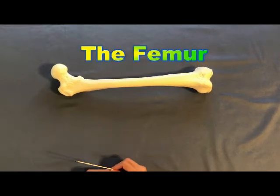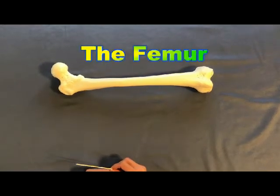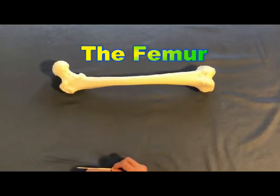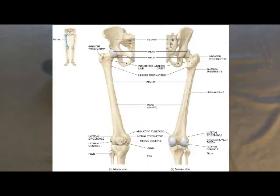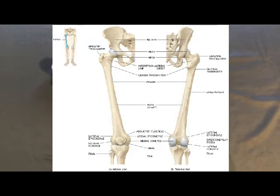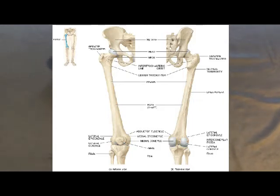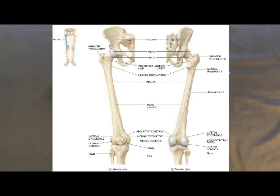The femur is the longest, heaviest, and strongest bone within the human body. The femur is known as the thigh bone, extending from the hip to the knee. The femur's length represents more than a quarter of the height of any individual.